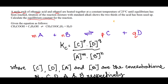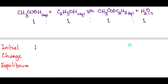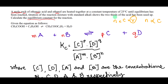Since number of moles equals concentration times volume, and since the volume is not given, we can assume the volume is constant at 1 dm³. This means number of moles is proportional to concentration. So the initial number of moles of the acid was 1 mole and the ethanol was 1 mole. Before the reaction, no products were formed, so ethyl ethanoate was zero and water was also zero. Two-thirds of the acid reacted, leaving only one-third in the reaction mixture.